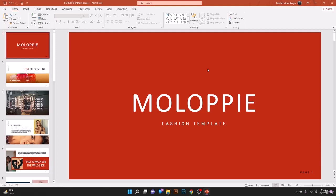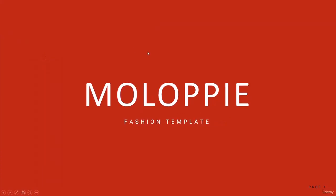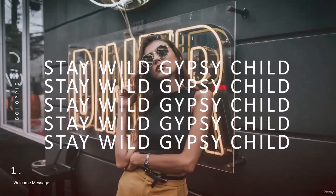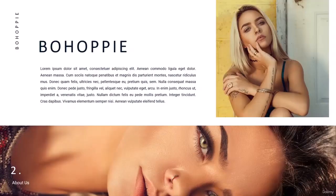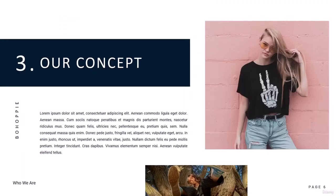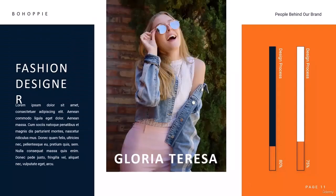To start the presentation, go to the Quick Access bar where you can see Start from Beginning, or use F5 as a shortcut. When presenting, a common mistake is to click the mouse to advance slides — while this works, it is not a professional way because you lose access to your PowerPoint controls.